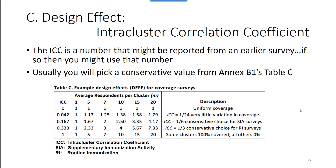The last input we need to calculate the design effect is called the intracluster correlation coefficient, or ICC. The ICC is a number that you might find reported from an earlier survey — if so, you could use that number. But it's more likely that you won't have a good value to use, and so you'll just select a conservative value from Annex B1.